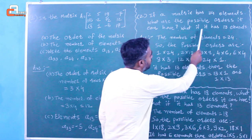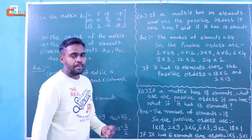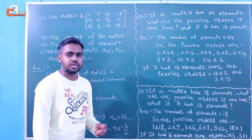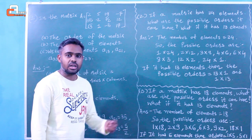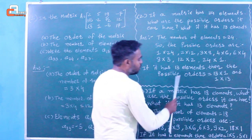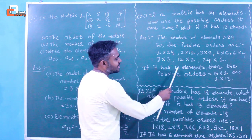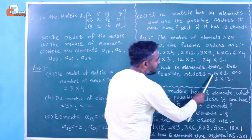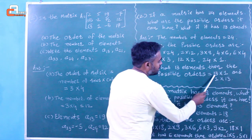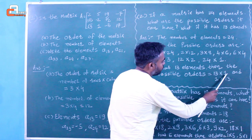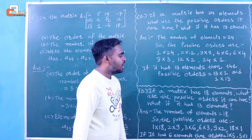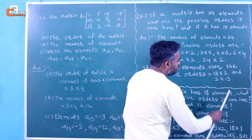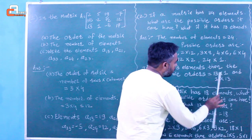What if the matrix has 13 elements? Then the possible orders of the pair must have a product equal to 13. Since 13 is a prime number, the only possible orders for the matrix are 13 by 1 — that is 13 rows and 1 column — or 1 by 13 — that is 1 row and 13 columns.